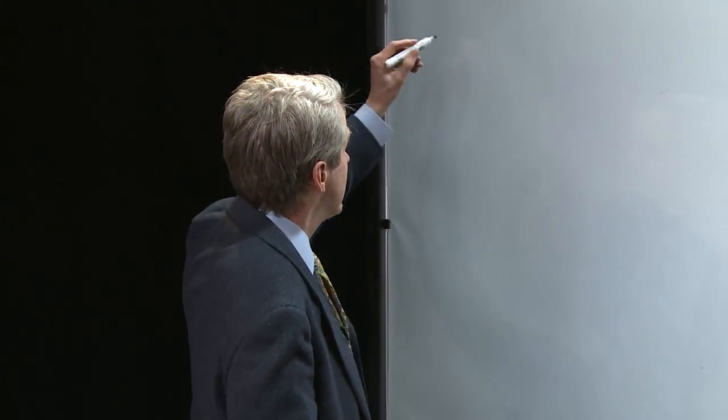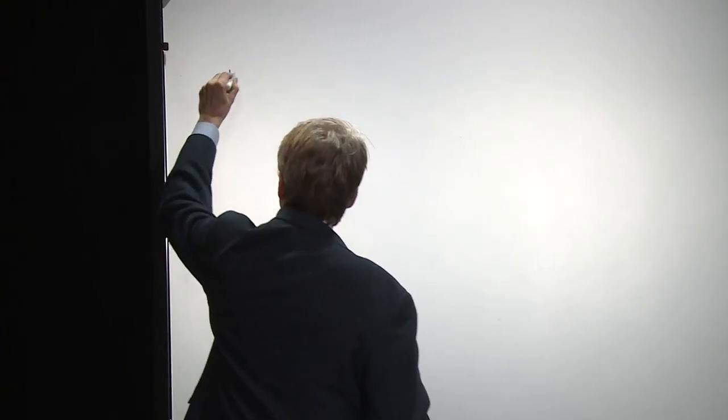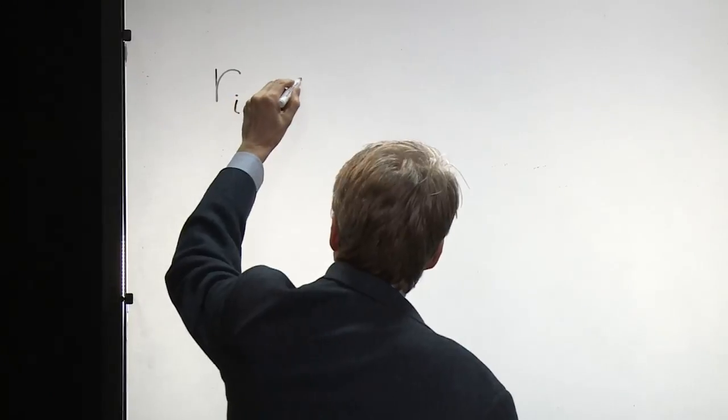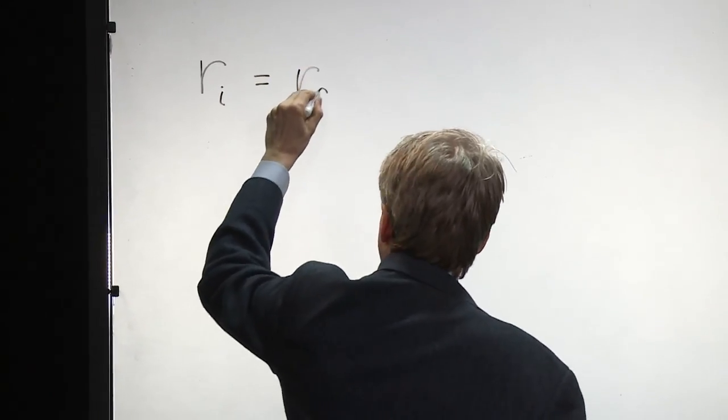We're talking about the security market line, the most impressive conclusion of the capital asset pricing model in finance. It is a relationship between the expected return on an asset and its beta. So what the equation says is that the expected return on the i-th asset is equal to the risk-free rate